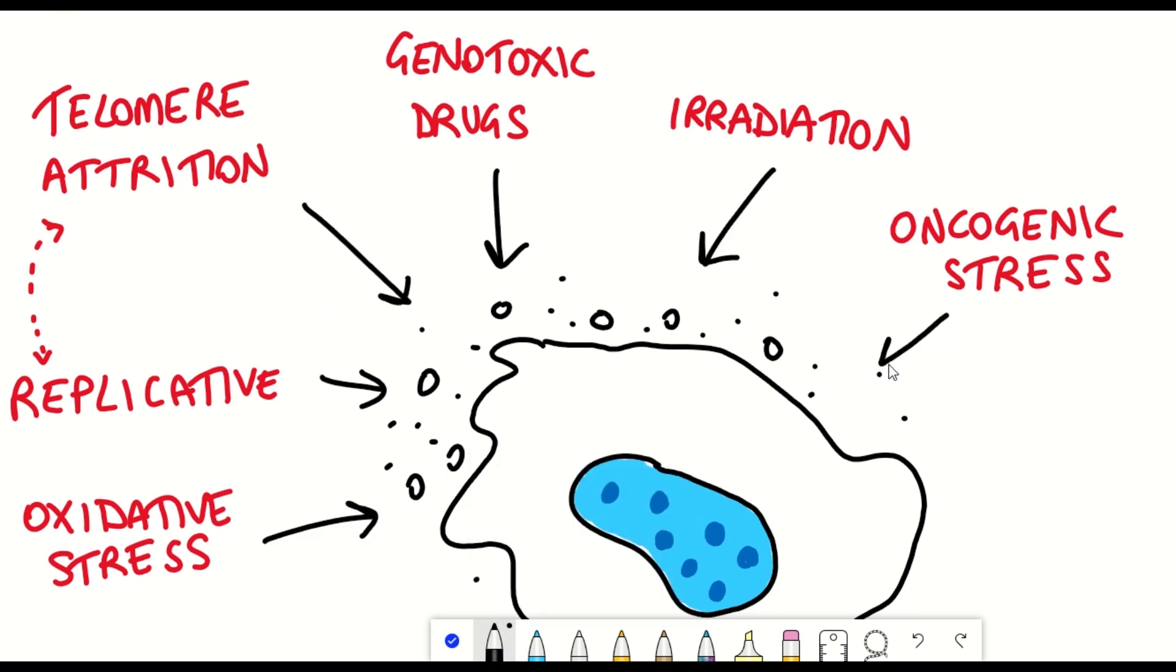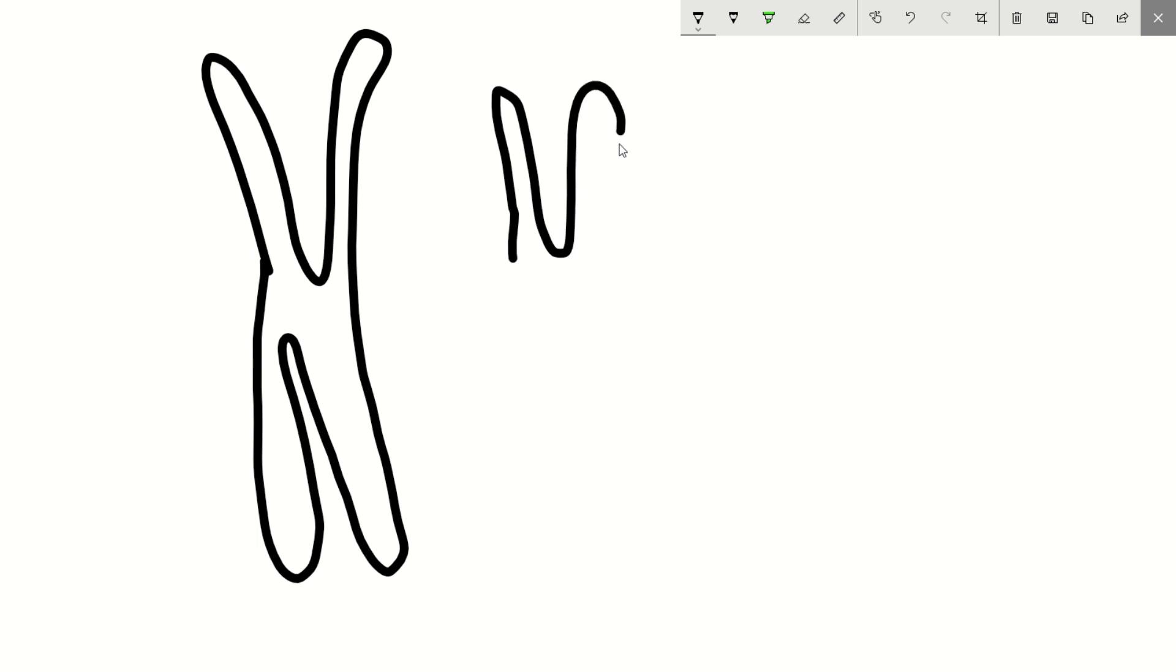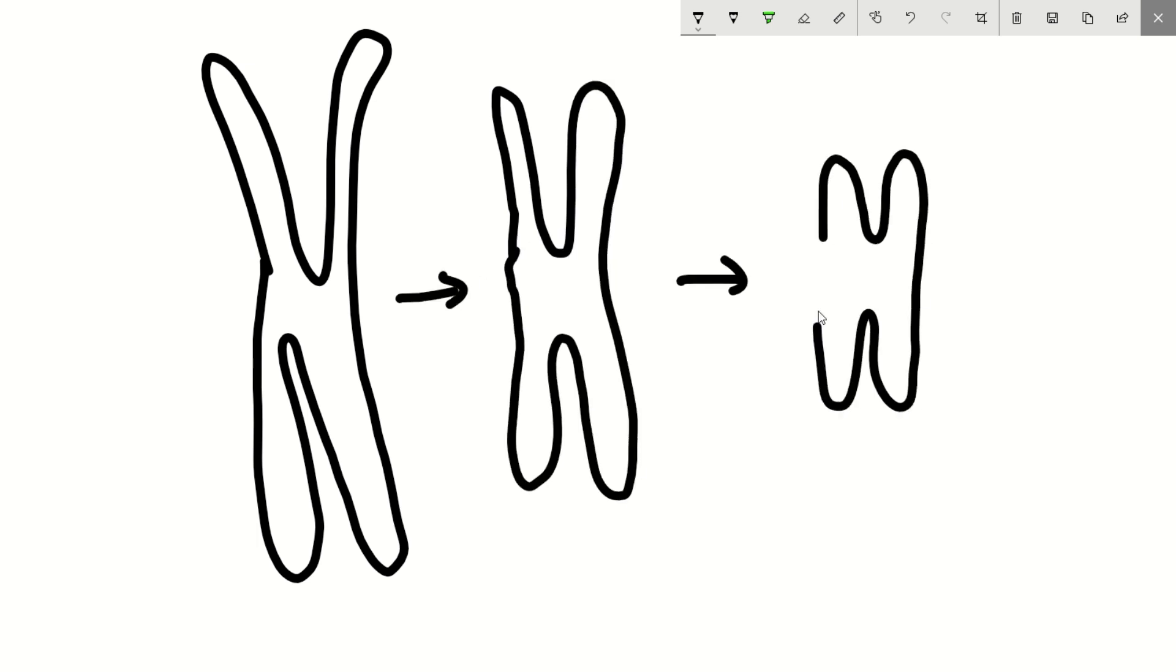Replicative senescence is the form of senescence that is most often talked about, and that is caused by telomere attrition, which is when the telomeres, these repetitive sequences at the ends of chromosomes, they shorten over time as a cell divides.